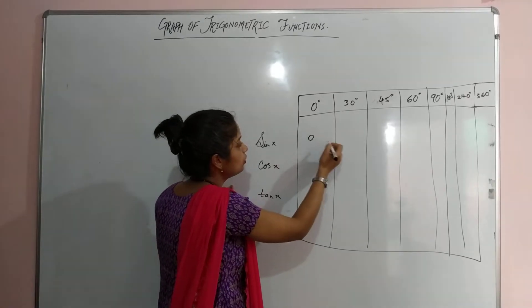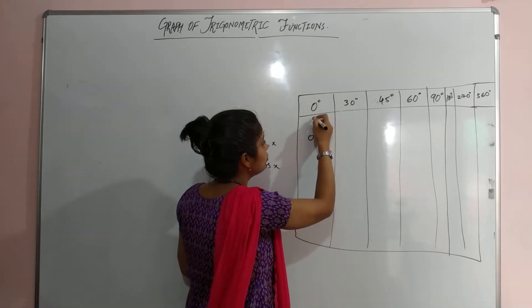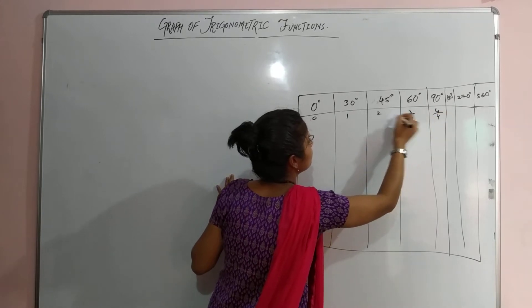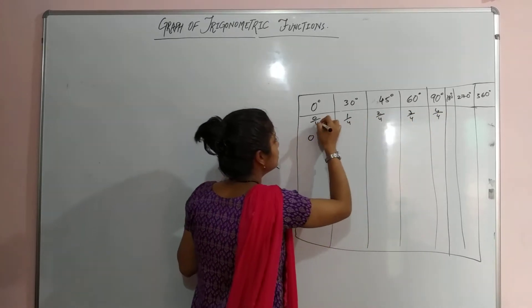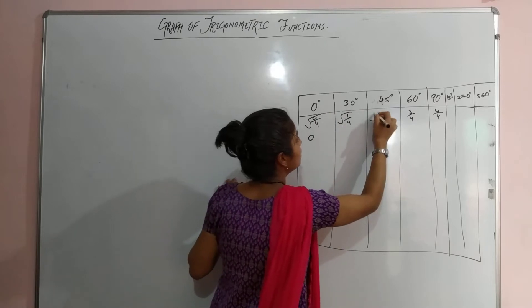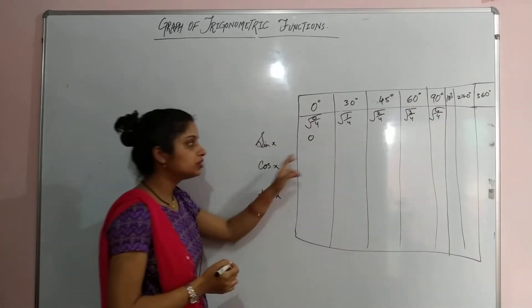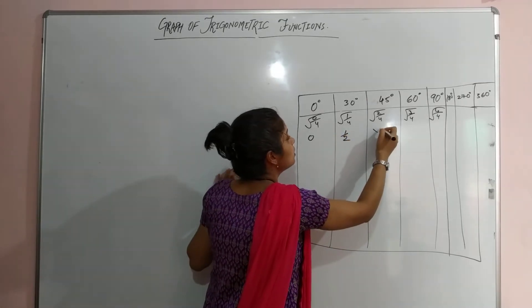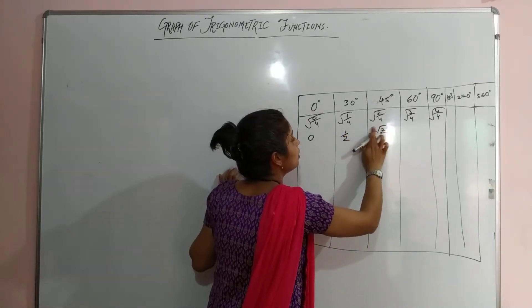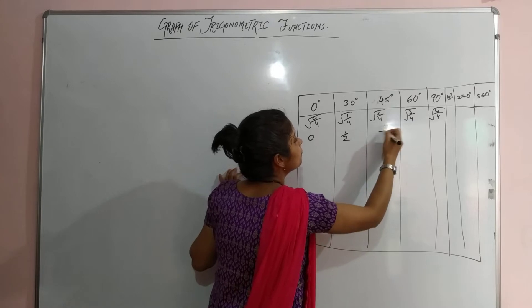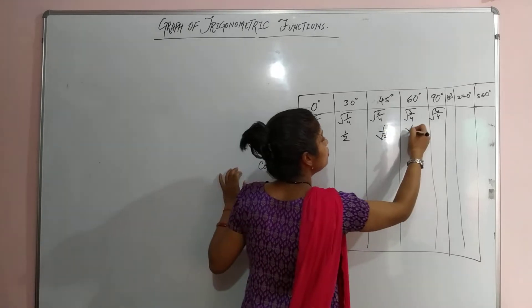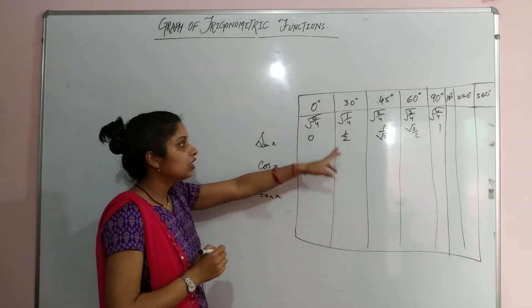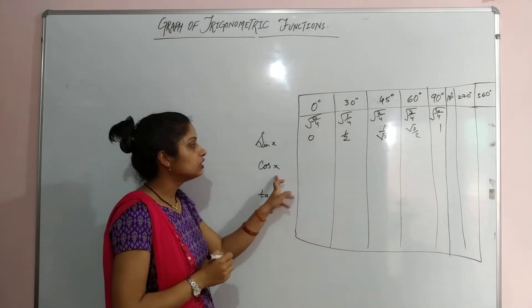You can find these values by dividing by 4 and taking the square root. You can observe: sin 0 is 0, sin 30 is 1/2, sin 45 is 1/√2, sin 60 is √3/2, and sin 90 is 1. These are the ratio values for the angles of sine x.